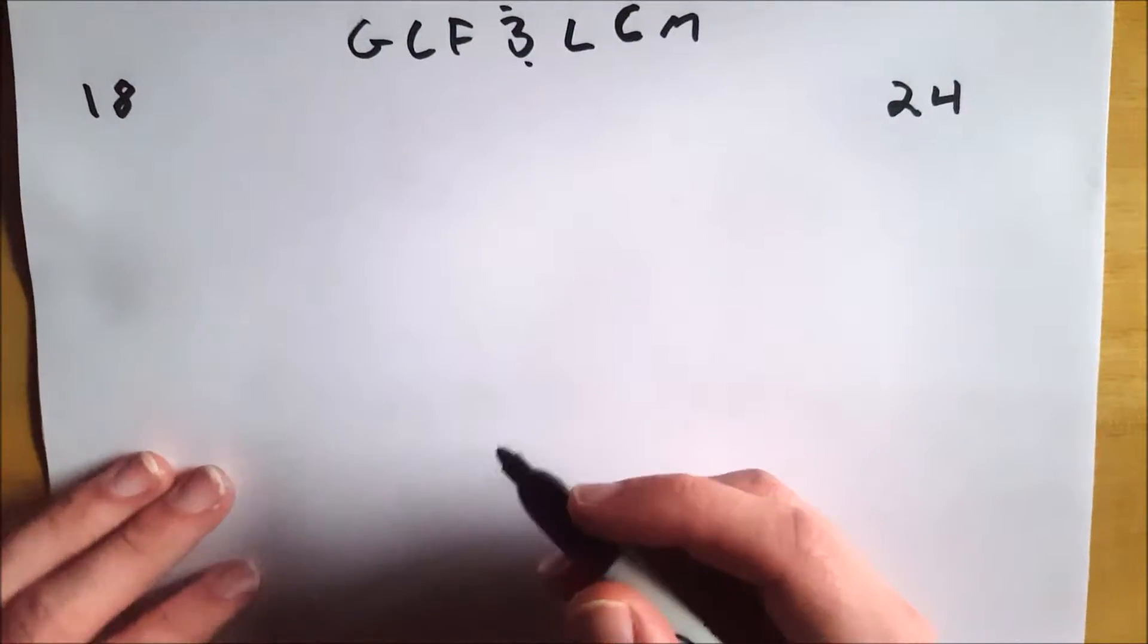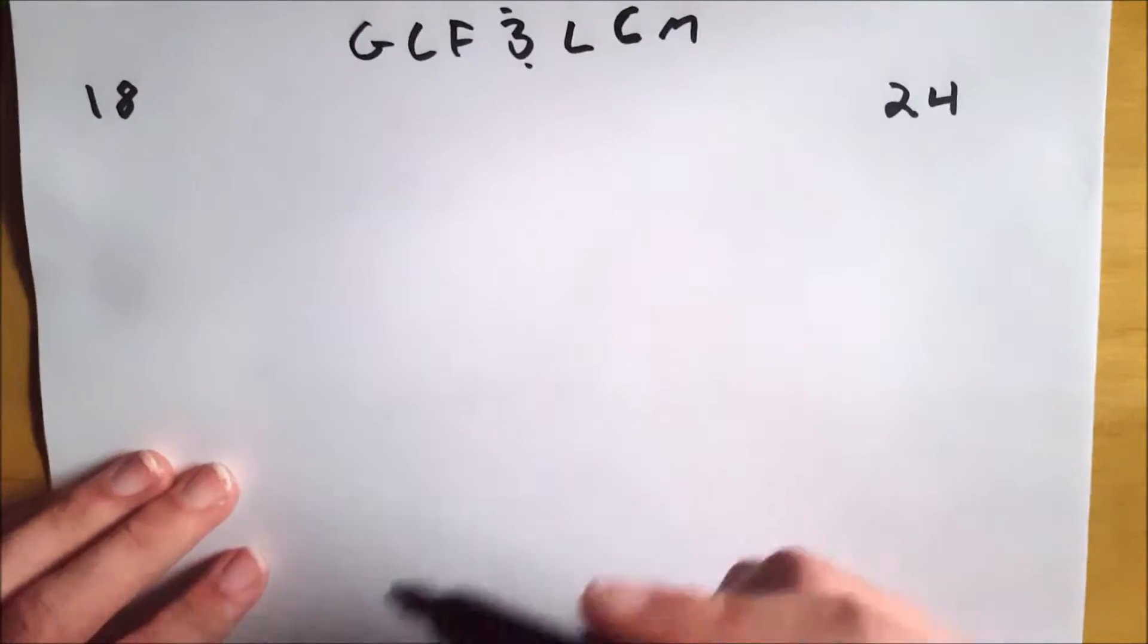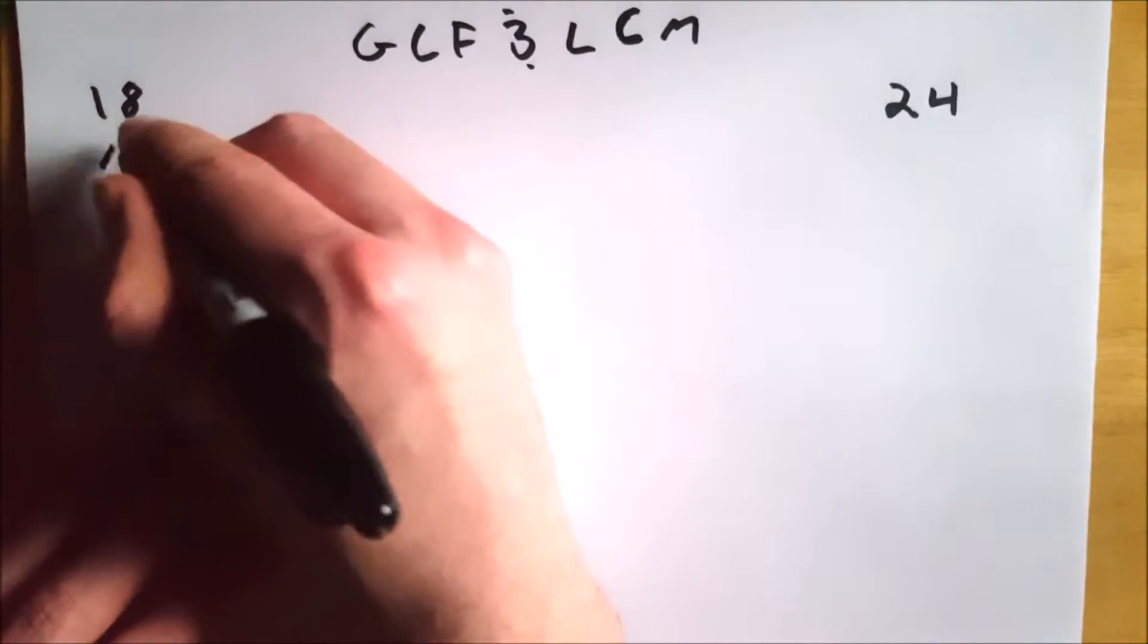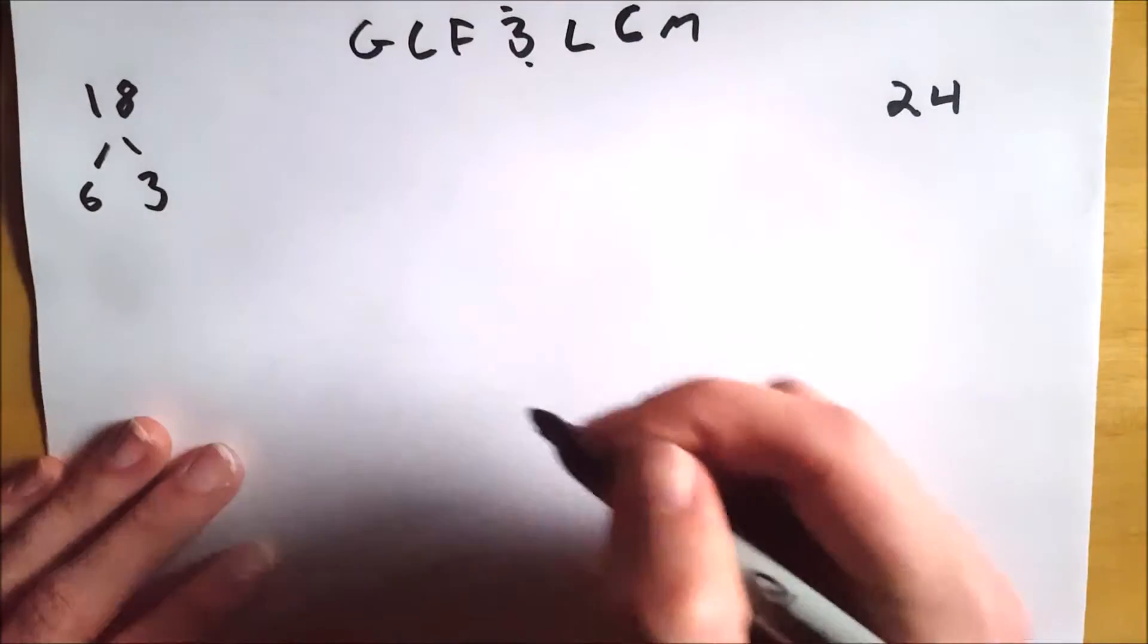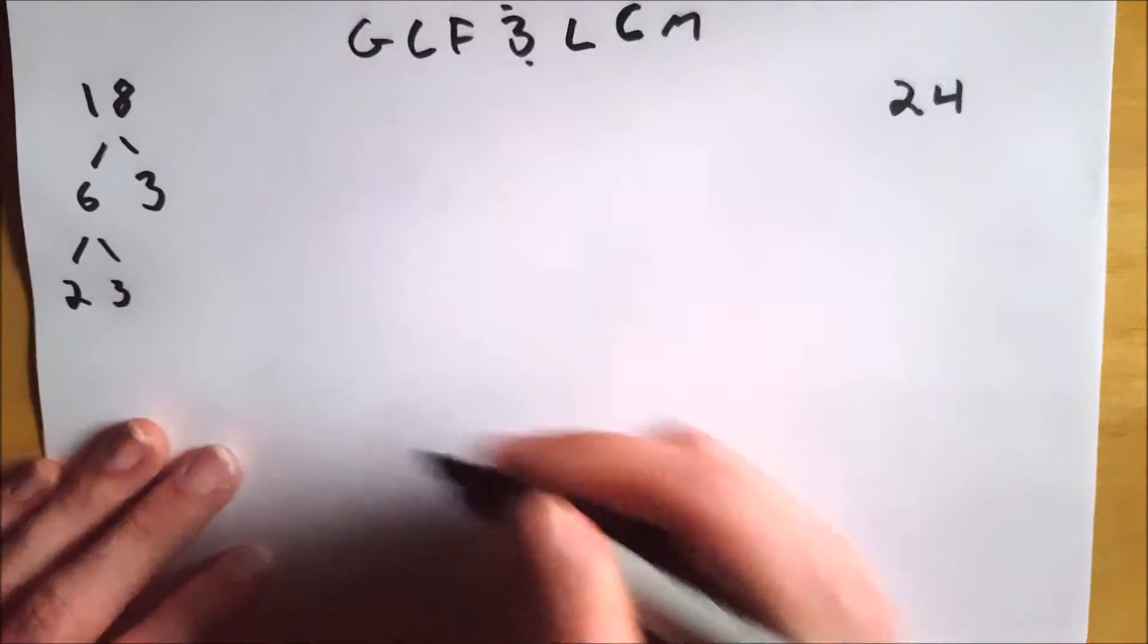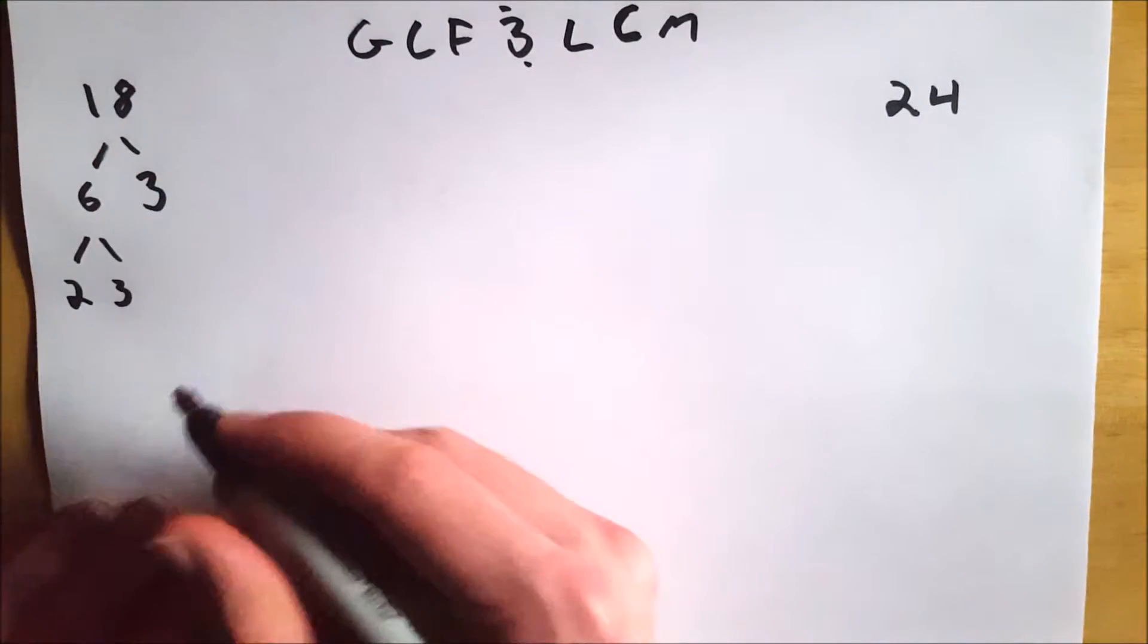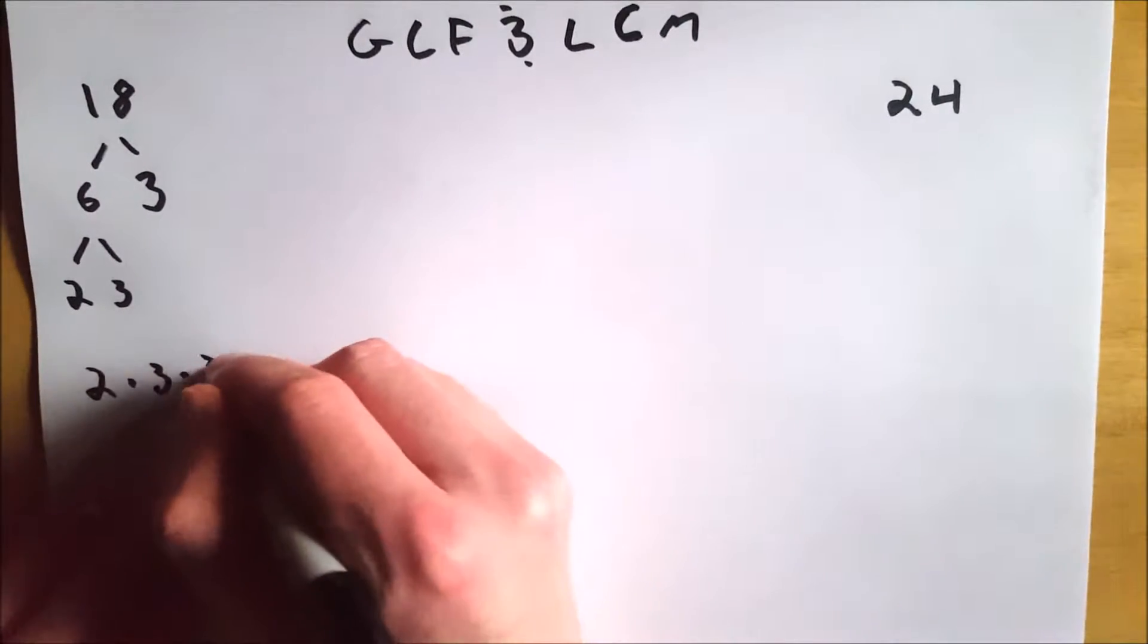So to start off, you need to find the prime factors of these numbers. So if you aren't familiar with what I'm about to do, I could do a video on that, but hopefully you can follow along. So 18 can be broken down into 6 times 3. 3 is prime, so we leave that there. 6 can be broken down into 2 times 3, and both of those numbers are prime, so we stop there. So now we've broken 18 down into its prime factors. That's 2 times 3 times 3.